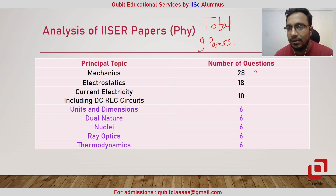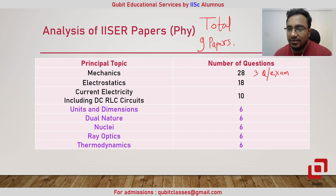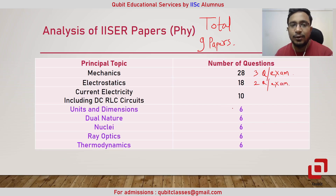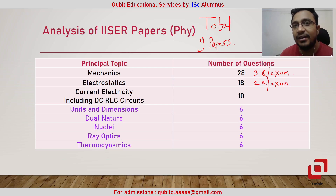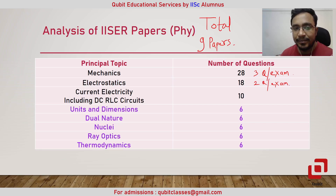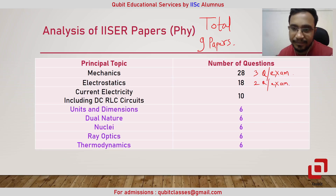The second most popular topic has been electrostatics with two questions per paper. In NCERT there are two chapters dedicated to electrostatics: the first one is electric charge and electric fields, and the second one is electric potential and capacitors. We also have some DC circuit problems which are included in current electricity.